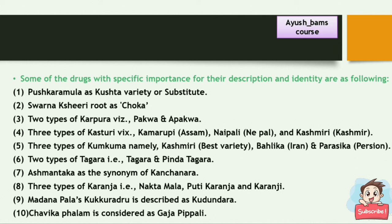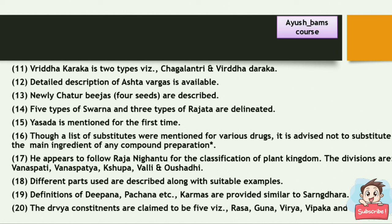Some drugs of specific importance for description and identity in Bhavamishra Nighantu: Kushkara Mula as a Kushta variety or substitute; Swannakshiri root as Choka; two types of Karbura — Pakwa and Apakwa; three types of Kasturi — Kamarupi, Naipali, and Kashmiri; three types of Kunkuma — Kashmiri, Bahalika, and Parashika; two types of Tagara — Tagara and Pindatagara; Ashpantaka as synonym of Kanchanara; three types of Karanjha — Naktamala, Puti Karanjha, and Karanji. Madanafana's Kukuradru is described as Kurundara, and Chavikafalam is considered as Gajapipali. Detailed description of Asta Vargas is available; newly Chaturpejas are described; there are five types of Swarnas and three types of Rajata. Yashana is mentioned for the first time. Though a list of substitutes is provided, it is advised not to substitute the main ingredient of any compound preparation.